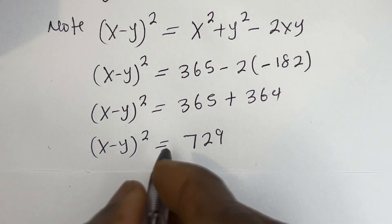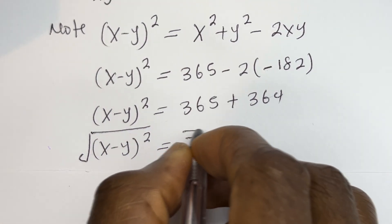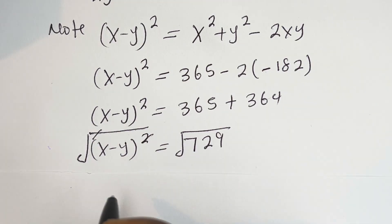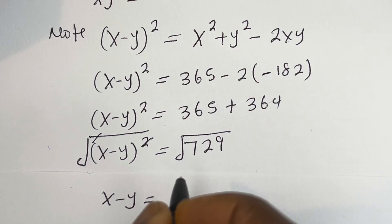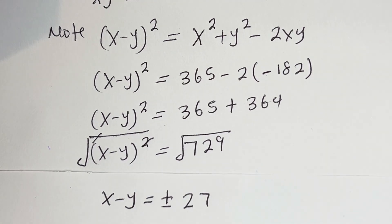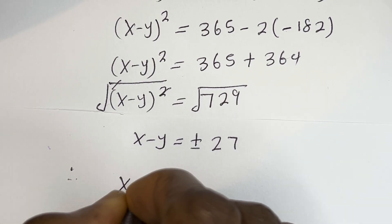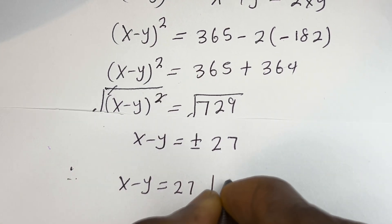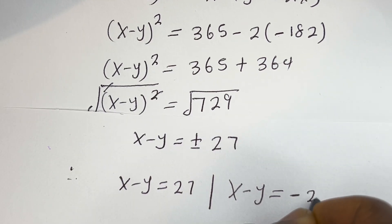Taking the square root of both sides: the square root of (s minus y) squared equals the square root of 729. Therefore s minus y is equal to plus or minus 27. So s minus y equals 27, or s minus y equals minus 27.